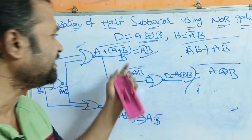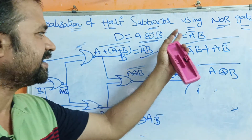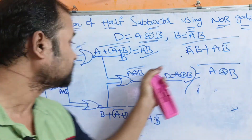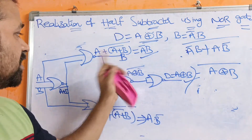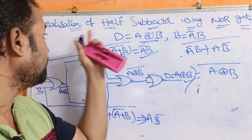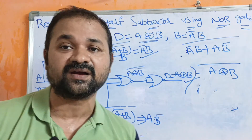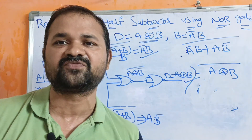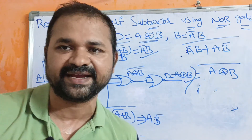So the difference is A XOR B and the borrow-out is A-bar·B. There is no need to write a separate connection for the borrow-out, since we already obtained it from the second NOR gate. In this way, we can implement a half subtractor using only NOR gates.